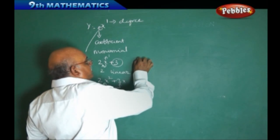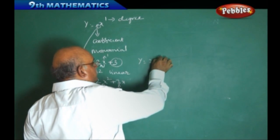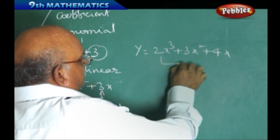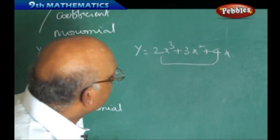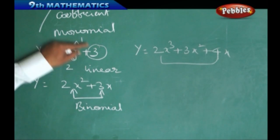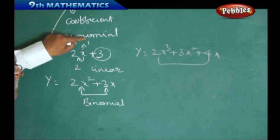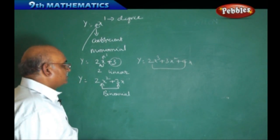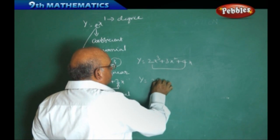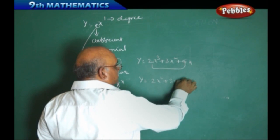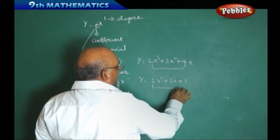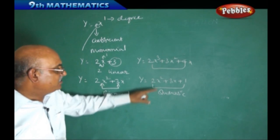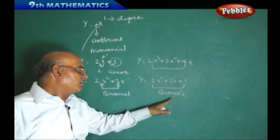In the same manner, if I take y equal to 2x cube plus 3x square plus 4x — here it consists of three different terms, so we are calling it a trinomial. Now, if I take y equal to 2x square plus 3x plus 1 — this we are calling it a quadratic expression or quadratic polynomial, since the power of x is 2.